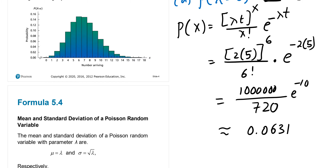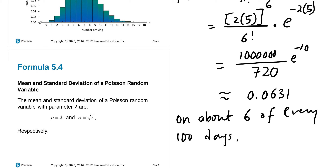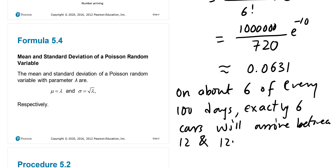The interpretation of this result: about 6.31% — or roughly 6 out of every 100 days — exactly six cars will arrive between 12 noon and 12:05 p.m.